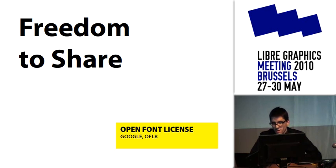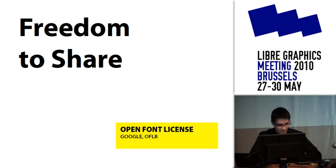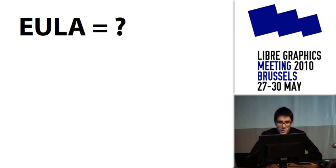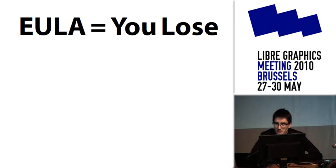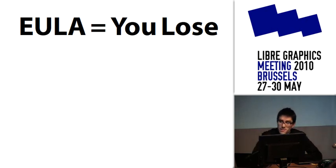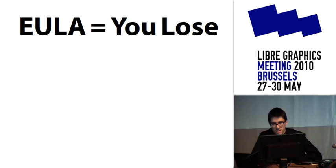Whenever I find a new font that I want and click buy, I always have this moment of tension where I think — I better check the license first to see what I'm allowed to do. This license we call the EULA, End User License Agreement. What does EULA usually turn out to mean? You lose. But you should check the EULA before deciding to purchase a font to check the freedoms I've outlined. You'd be surprised — a lot of foundries don't let you embed in a PDF, which is something we feel like we need to do now in order to share our work.